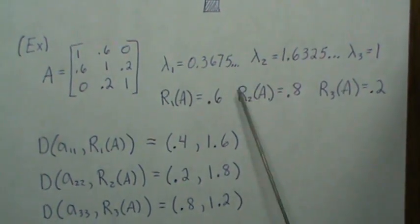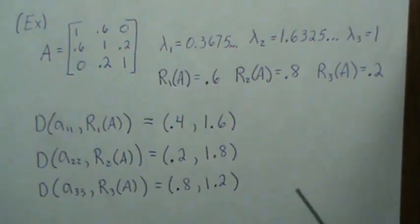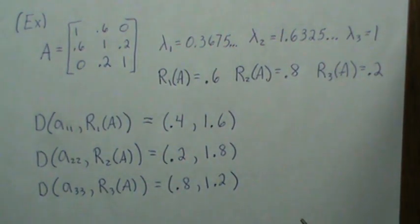So if we take the union of these, we get 0.2 to 1.8, which contains all of the eigenvalues in this example.